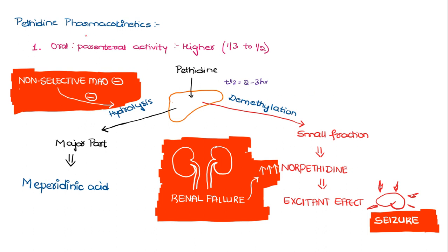Regarding the pharmacokinetic properties of pethidine, oral to parenteral activity is higher. Pethidine undergoes metabolism in the liver with the help of the enzyme hydrolase. Hydrolysis produces the major metabolite meperidinic acid, while demethylation produces a small fraction of norpethidine. The major part is meperidinic acid and the smaller part is norpethidine.